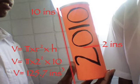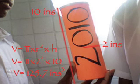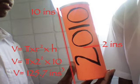To find the volume of a cylinder, you times pi by the radius squared by the height. The height is 10 inches and the radius is 2 inches, so the volume is 125.7 inches cubed.